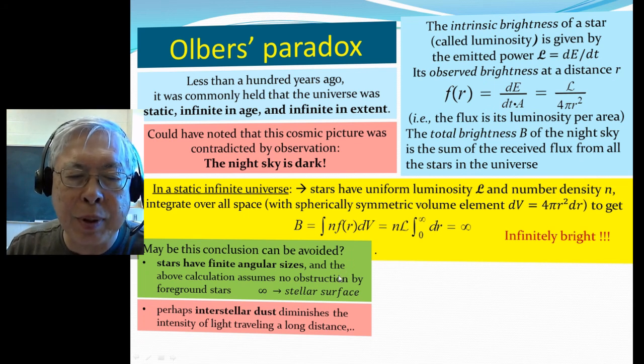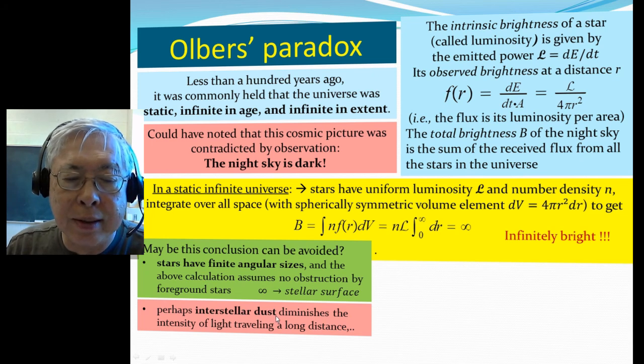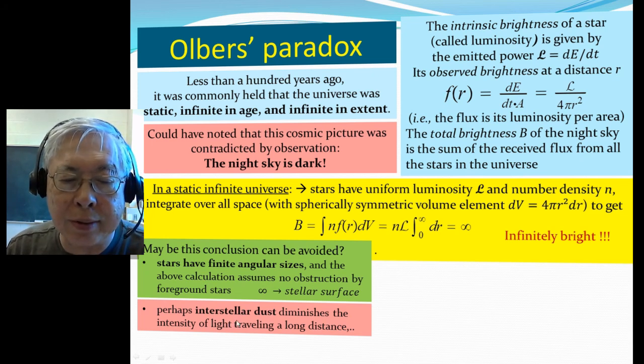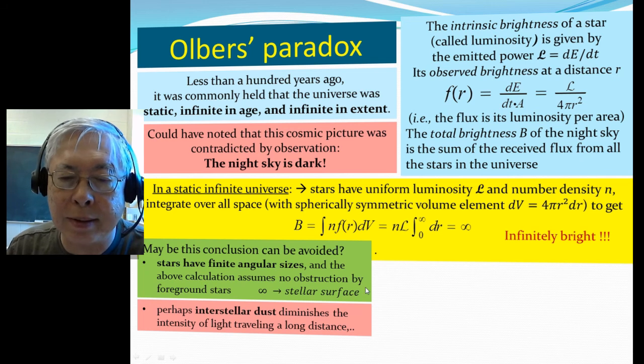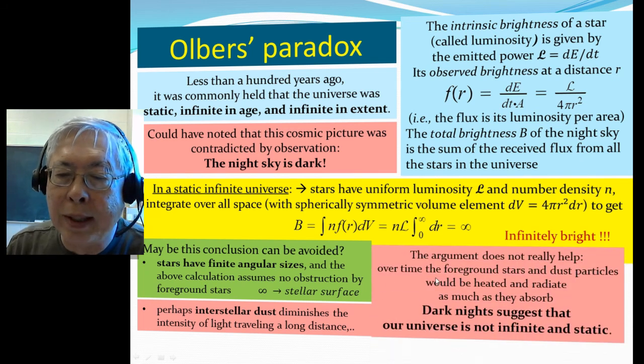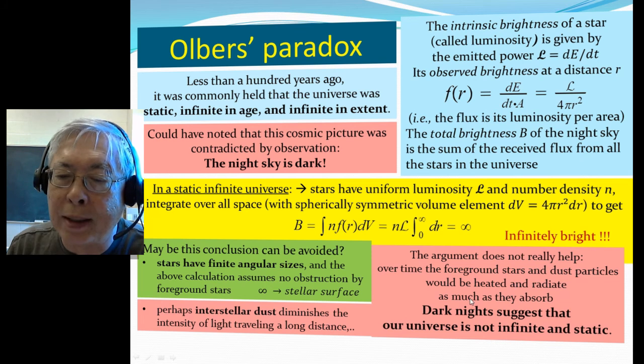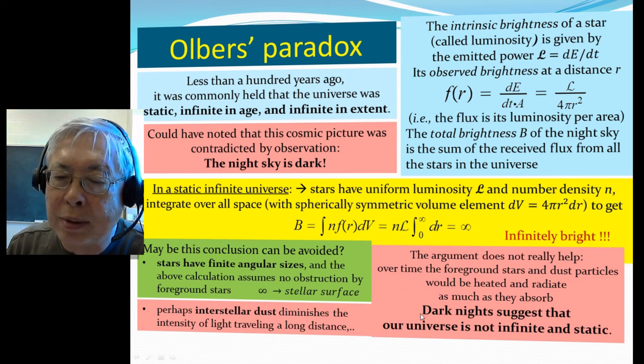Well, again, we say, perhaps, this is not right, because there are, maybe, there are interstellar dust that diminish brightness of the light traveling along because of the absorption by the dust. But that doesn't really help, because over time, the foreground stars and the dust particles will be heated up and radiate as much as they absorb. So therefore, in the end, the star, the dust would not diminish the brightness. So it seems that the dark night suggests that our universe is not infinite and not static. Okay.